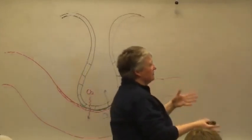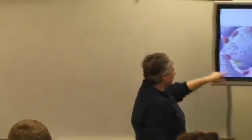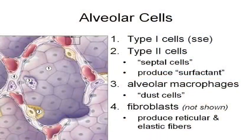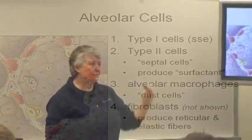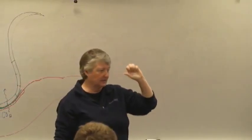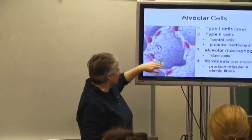Now every so often you have a type II cell. You don't have a lot of them, maybe three per alveolus or something like that. These guys produce something called surfactant. Surfactant feels, you know when you get dishwashing detergent on your hands, like Dawn, it's got that slick feeling to it. That's kind of what this surfactant does, it's almost like a detergent in a way.